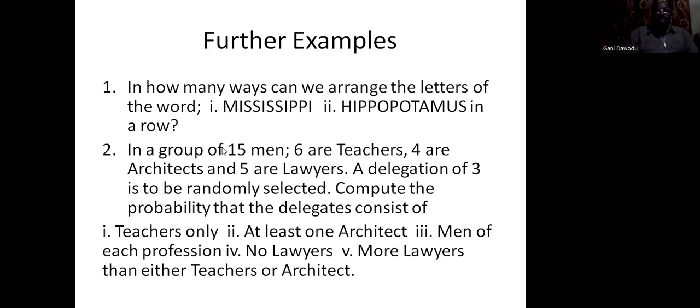For the example, how many ways can we arrange the letters of the word Mississippi? Coincidentally, there are 11 letters in these two words. And the I appears 4 times, the S appears 4 times, and the P appears 2 times. So, it's a case of N factorial, divided by 1 factorial, divided by 4 factorial for the I's, divided by 4 factorial for the S's, divided by 2 factorial for the P's.